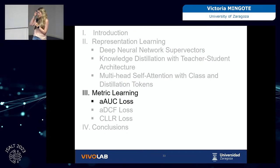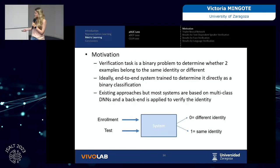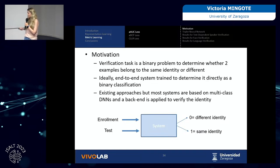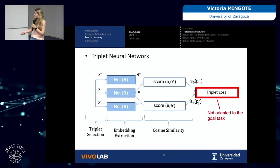This concludes the first part on representation learning, where all approaches were trained using traditional cross-entropy loss. The second part presents three new loss functions oriented to the verification task. Ideally, verification systems based on DNNs should be end-to-end for binary classification. However, in many current systems, the typical approach is training a DNN for multi-class classification and then applying a backend over the embeddings. A common backend is a triplet neural network, composed of three instances of the same network with shared parameters.